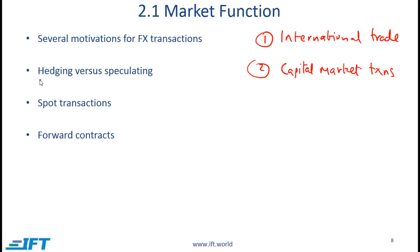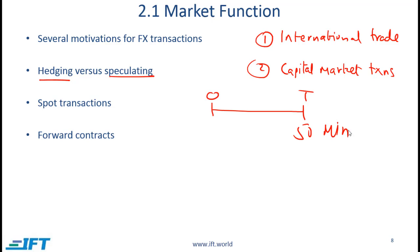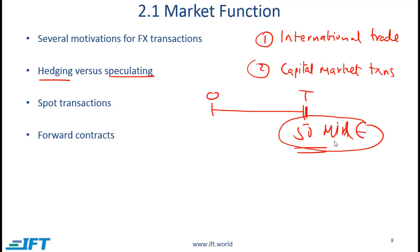You need to understand the distinction between hedging and speculating. Hedging is where we engage in a transaction to reduce or mitigate foreign exchange risk. For example, if you have an importer who at some point in the future needs 50 million euro — let's say a United States-based company — they can engage in a foreign exchange transaction to buy euro today at a particular price, to hedge the risk of the euro becoming too expensive in the future.